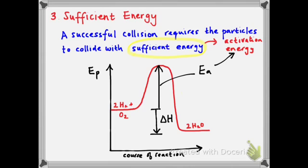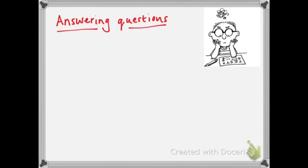Those are the three aspects of the collision theory: the particles must collide, they must collide with the correct orientation, and they must collide with sufficient energy. Let's talk briefly about how one goes about answering these kinds of questions. A typical question would ask you to explain why an increase in temperature increases the rate of reaction, or why a higher concentration of acid increases the rate of reaction of an acid with a metal. Let's have a look at each one in turn.